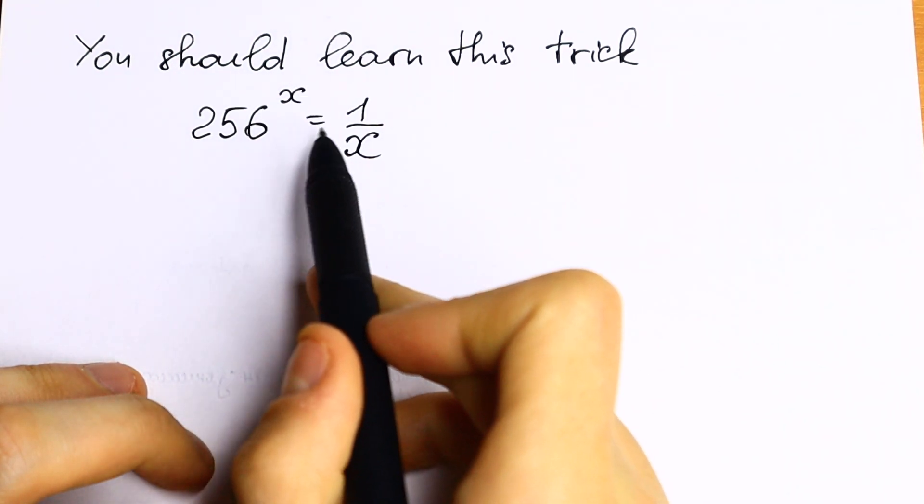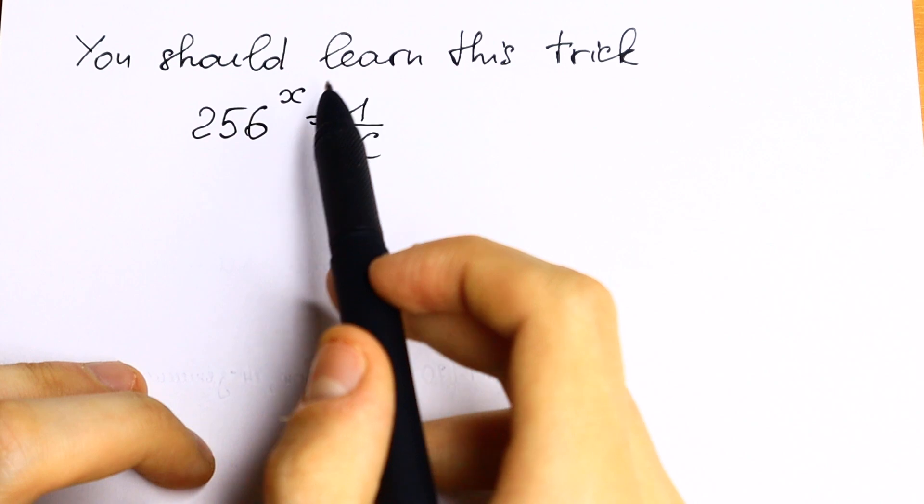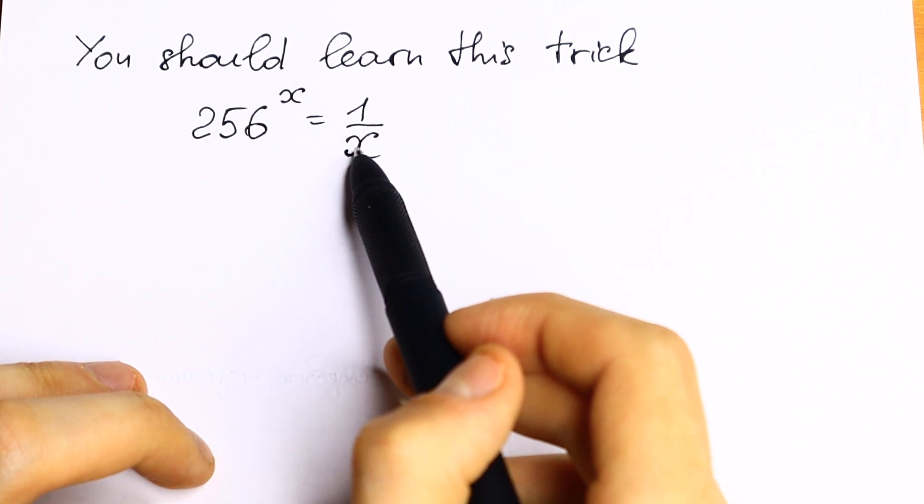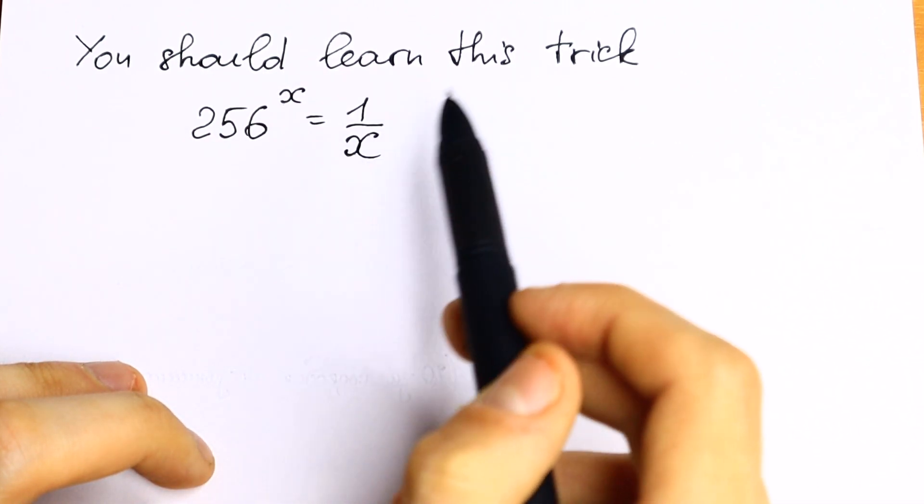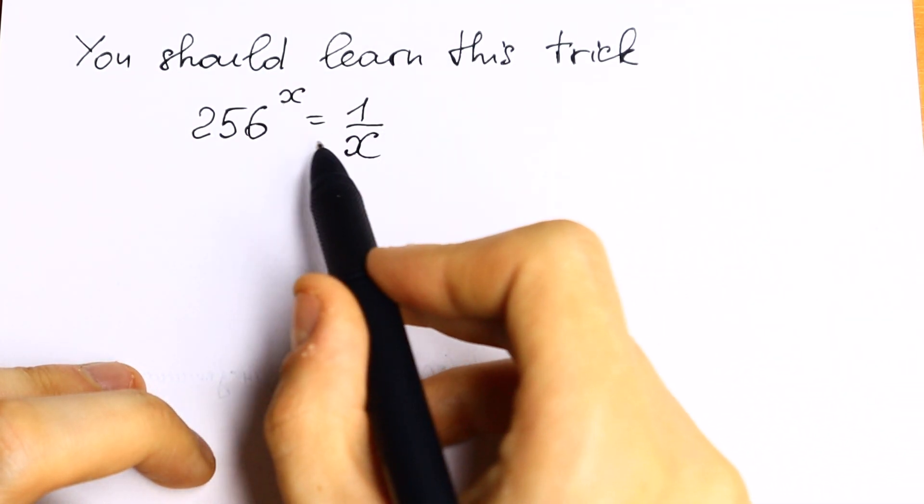We have 256 to the power x equal to 1 over x. Of course this is a hard equation because we have an exponent and we have the same power in our denominator, but I want to show you how we can solve it easily.